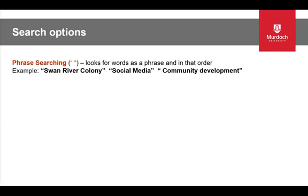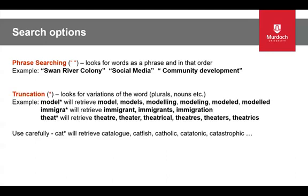Here are some additional options to consider. When searching for phrases of more than two words, you need to use quotation marks — this will look for the words as a phrase in that order. Examples are "river colony" and "social media" and "community development". Truncation: the most common truncation symbol is the asterisk. By adding it to a word, it will look for variations of that word — for plurals, nouns, etc. For example, model* will retrieve model, models, modelling, and modelled. Similarly, theatre* retrieves different spellings of that word. Use truncation carefully — if you truncate too soon, you will retrieve words that are not required.